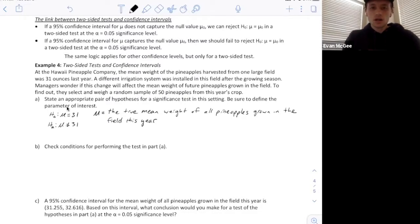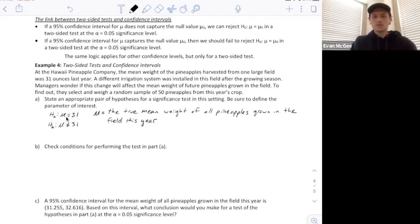Here's our hypotheses and the parameter we're testing. The reason it's equal to 31 is because they told us that in the previous year it was 31 ounces. The mean was 31 ounces. So with the new irrigation system, they want to know, has it changed?